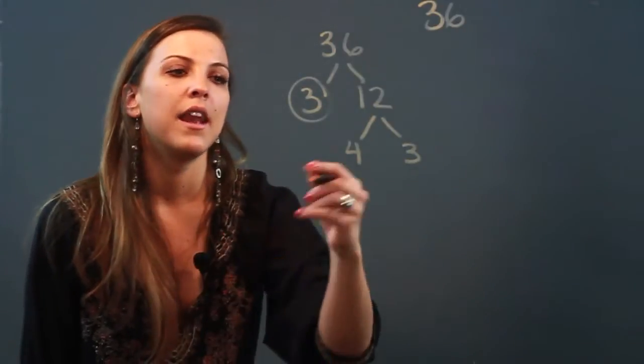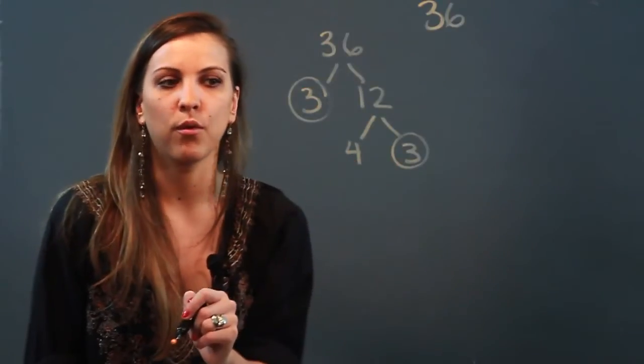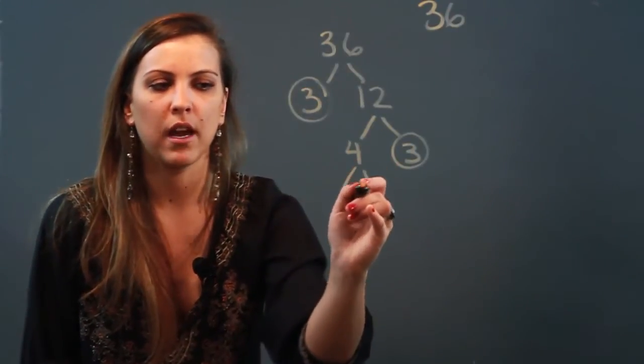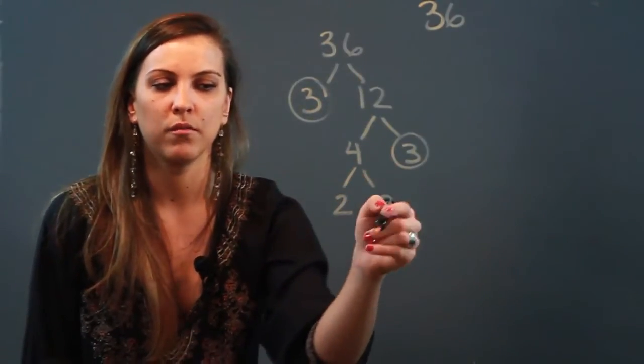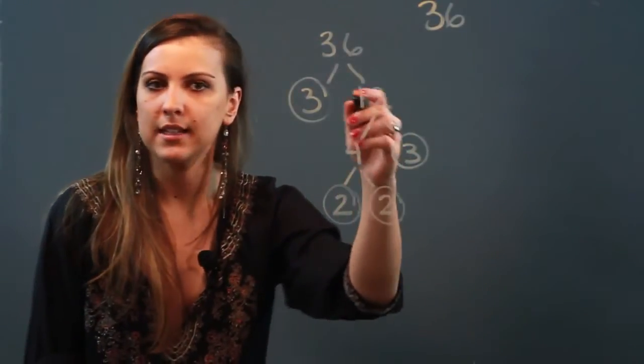When I look at 4 and 3, 3 is prime so I'm circling that. I'm going to go ahead and break down 4 further, so 4 can be broken down into 2 and 2. These are both primes so I'm going to circle them both.